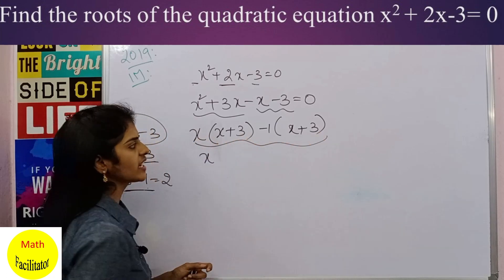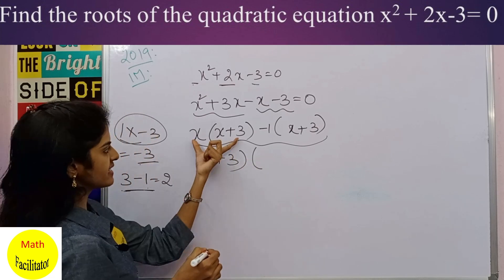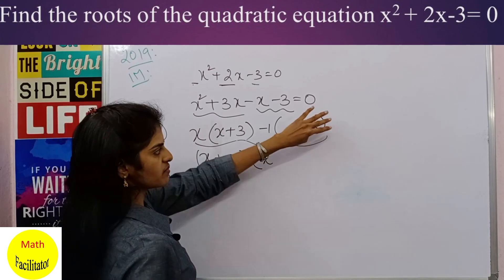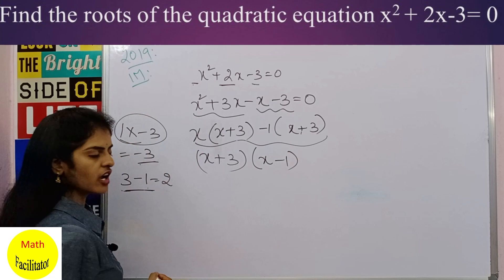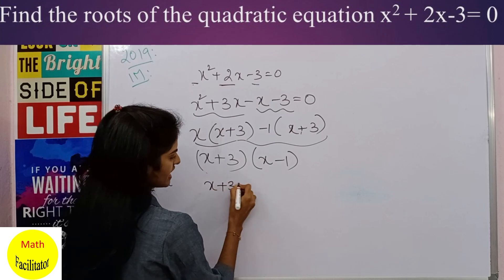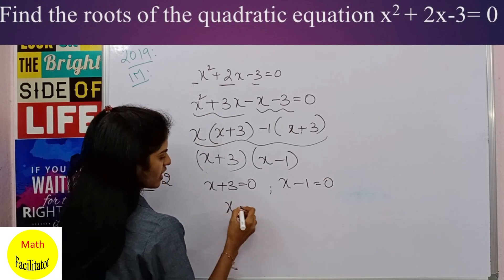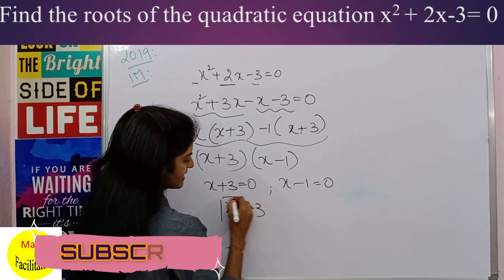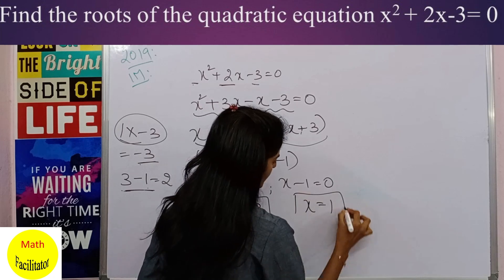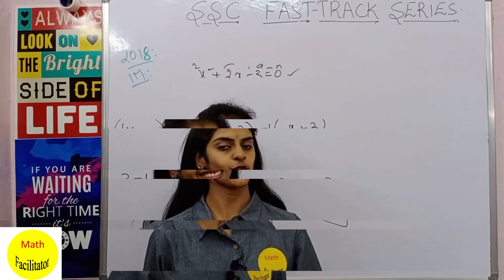In these two terms, you can take (x + 3) as common. After taking (x + 3) out, the remaining terms are x and -1, giving (x + 3)(x - 1) = 0. Equating each factor to zero: x + 3 = 0 gives x = -3, and x - 1 = 0 gives x = 1. So x = -3 and x = 1 are the roots.